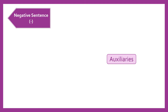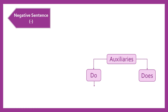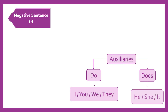In the negative sentence, we're going to use words called auxiliaries — vamos a utilizar unas palabras que se llaman auxiliares. And we have two types: do and does. We're going to use do with the pronouns I, you, we, they, and does with the pronouns he, she, it.